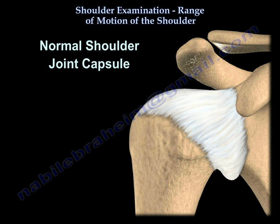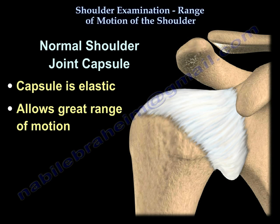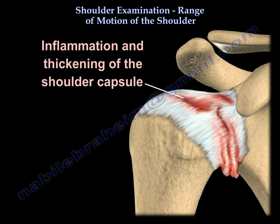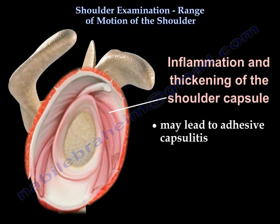Here you can see a normal joint capsule. The capsule is elastic and allows for great range of motion. When inflammation and thickening of the shoulder capsule occur, it may lead to adhesive capsulitis.